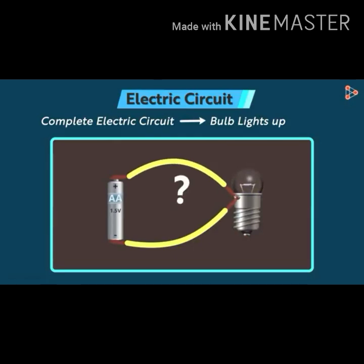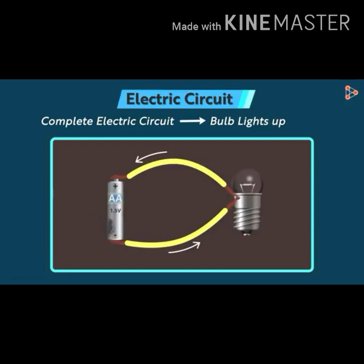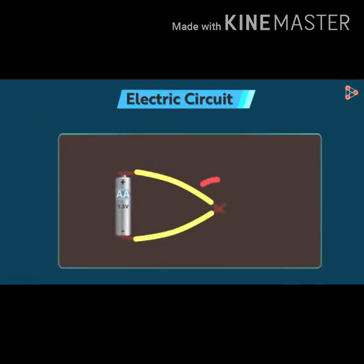If both wires are connected to only one point, the circuit will not be complete and the bulb will not glow because one terminal remains unconnected. In this condition both the positive and negative terminals are attached to only one terminal of the bulb, and the negative current flows directly toward the positive terminal of the dry cell — a short circuit. The bulb will not glow, and in the worst case the dry cell may burst and cause injury. Never connect the positive and negative terminals directly; doing so drains the battery quickly and can damage the cell.